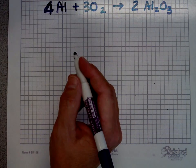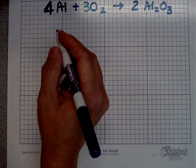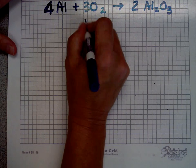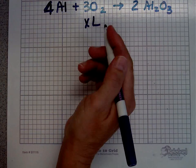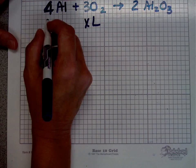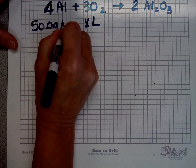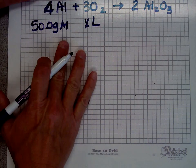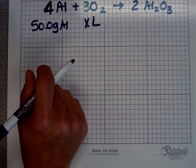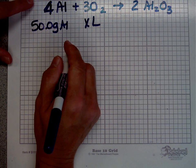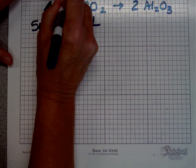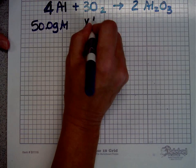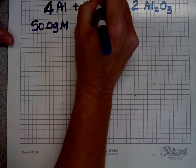Now I know these are mass-volume problems, so I'm going to read the problem. It says calculate the volume of oxygen gas, so we need X number of liters, that's a volume, required to react with 50 grams of aluminum at STP. I think I'm going to need the mass of both of these. I just looked up aluminum, I see that it's 27 grams per mole. And oxygen is 16 grams per mole, but this is a diatomic molecule, it's O2, so it's 16 plus 16, 32 grams per mole.